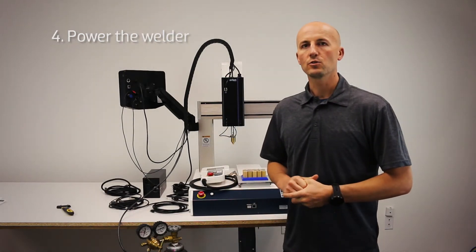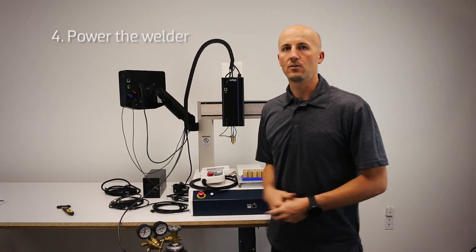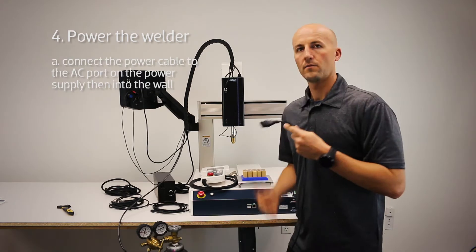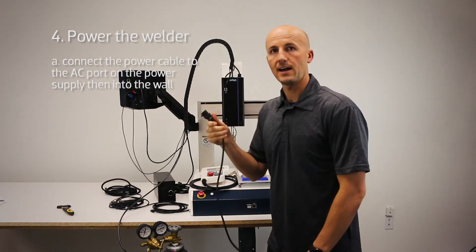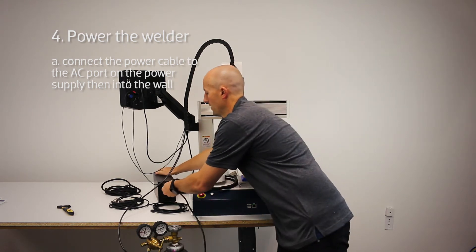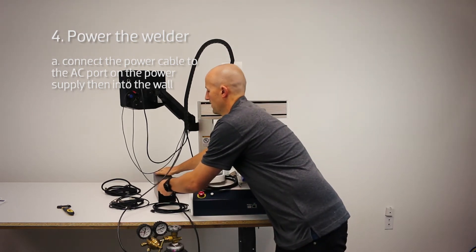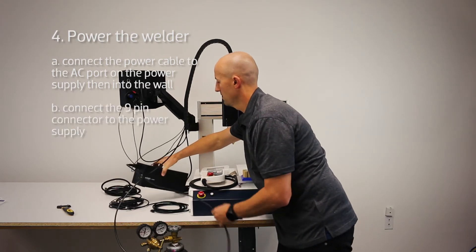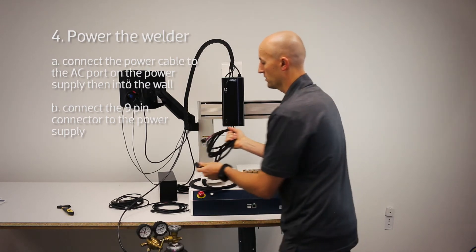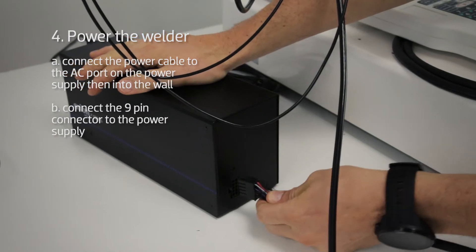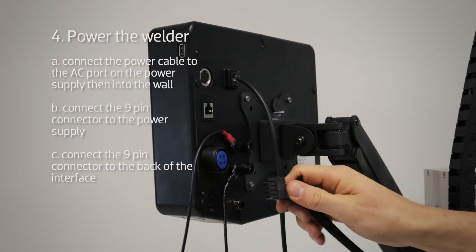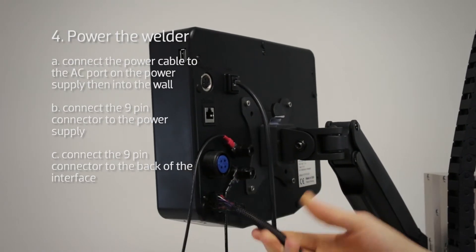Next we need to power the welder. You have a power cable that came with the system. Plug this into the side of your power supply at the AC power connector. On the other side you have a 9-pin connector. One side goes into the power supply box and the other side goes up into the interface.